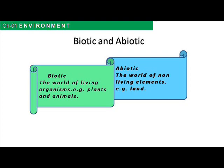Abiotic components: abiotic factors refer to non-living physical and chemical elements in the ecosystem. Abiotic resources are usually obtained from the lithosphere, atmosphere and hydrosphere. They don't breathe, grow, or have life. Examples of abiotic factors include water, soil, sunlight, minerals, etc.